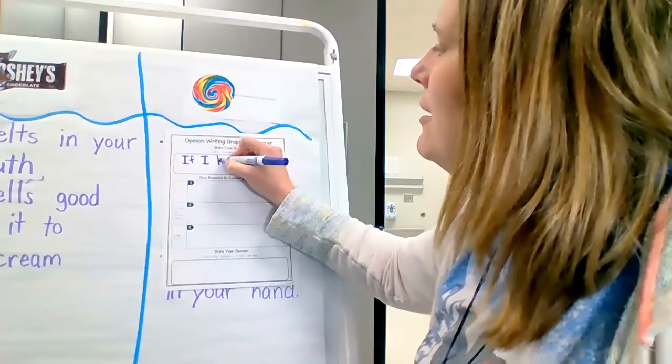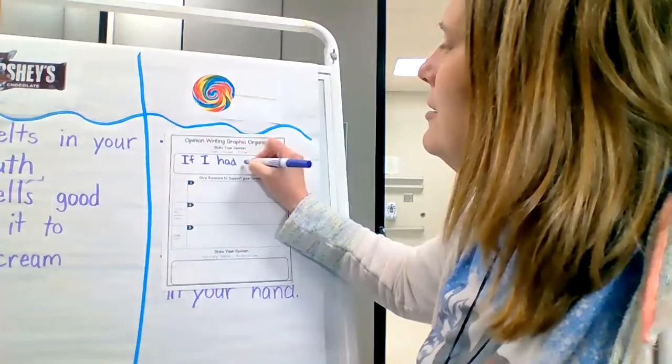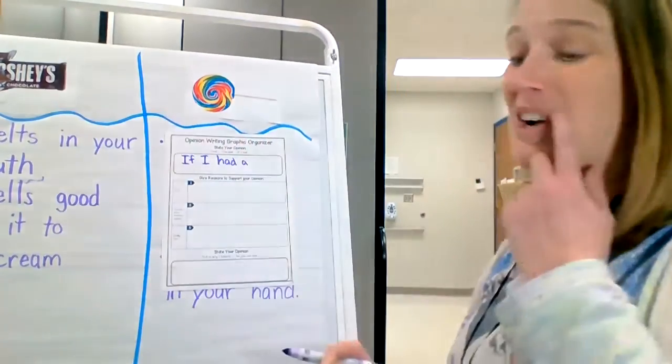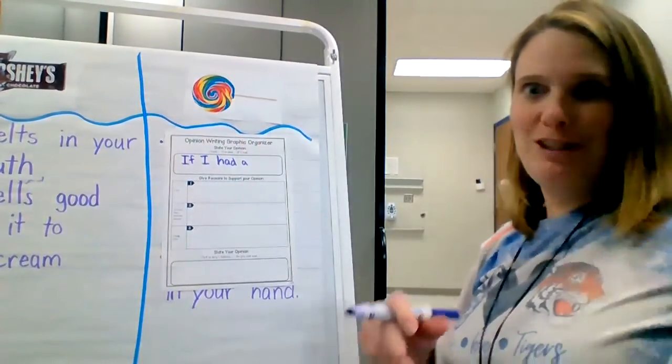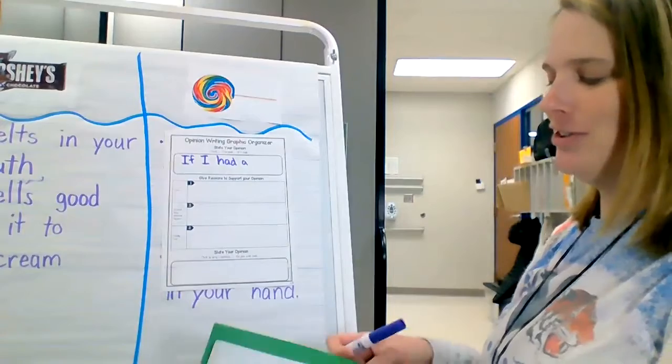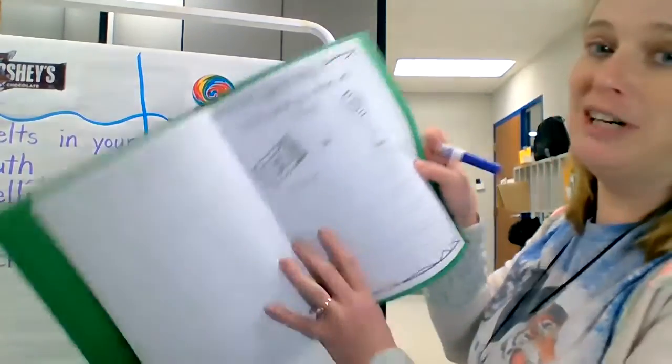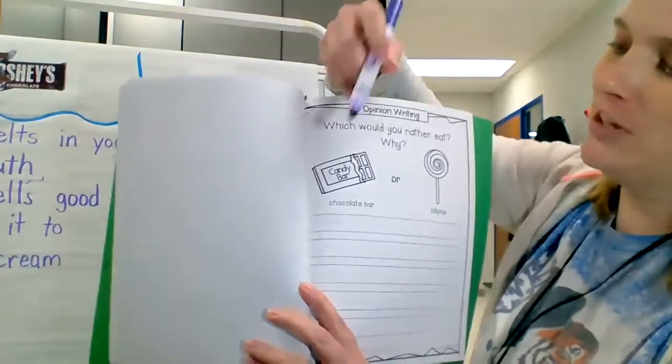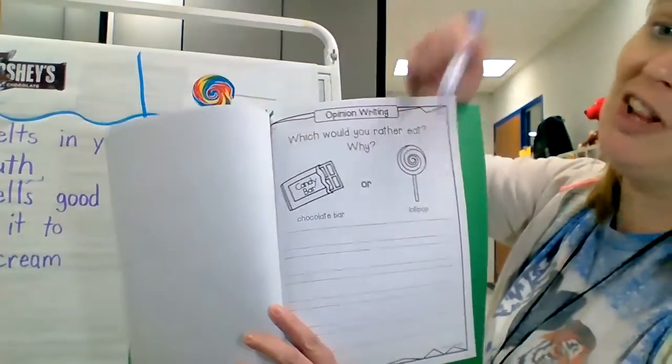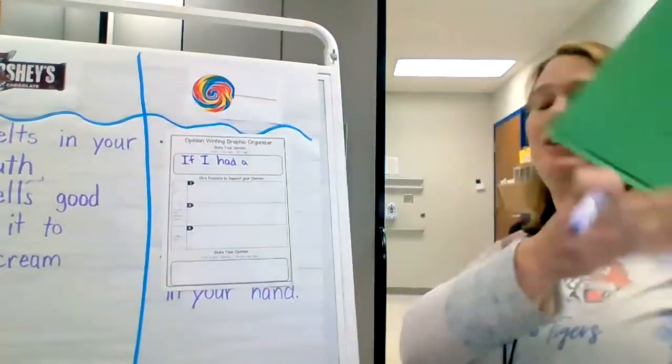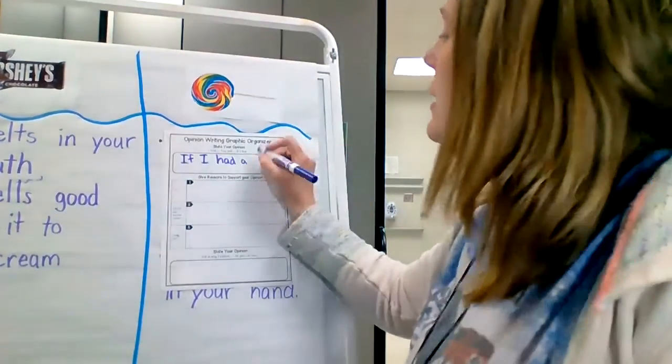If I had a chocolate bar, and you know what, if you want to know how to spell it, did you notice it's on the next page of our journal? If you want to make sure you get it right, right there we have chocolate bar and we have lollipop.